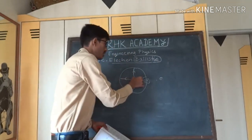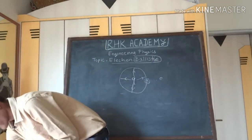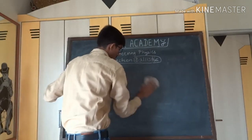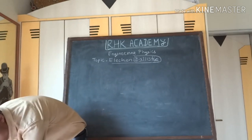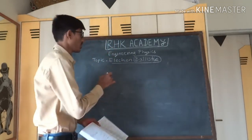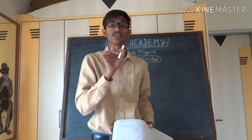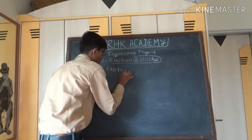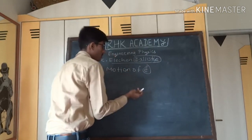Electric field is usually represented by electric field lines. Our next topic is to discuss the motion of an electron in a uniform electric field.